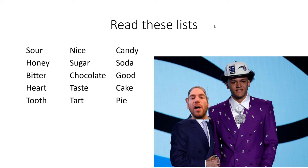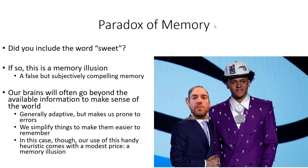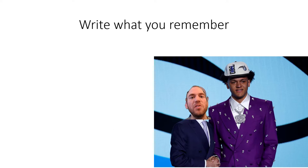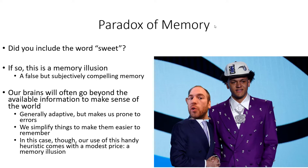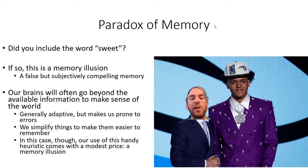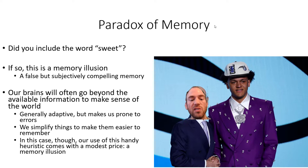Here's an example: take 30 seconds to memorize a list of random words without writing anything down. When you wrote the words down, did you include the word 'sweet'? If so, this is a memory illusion — a false but subjectively compelling memory. Our brains will often go beyond available information to make sense of the world. It's generally adaptive, but makes us prone to errors. We simplify things to make them easier to remember, but in this case our use of a candy heuristic comes with a modest price: a memory illusion.